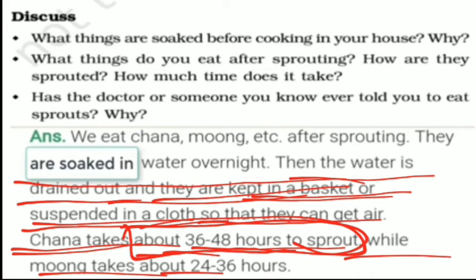What things are soaked before cooking in your house? We eat chana and moong after sprouting. They are soaked in water overnight and the water is drained out. Doctors always advise us to eat sprouted seeds because they are very nutritious and good for our stomach and health.